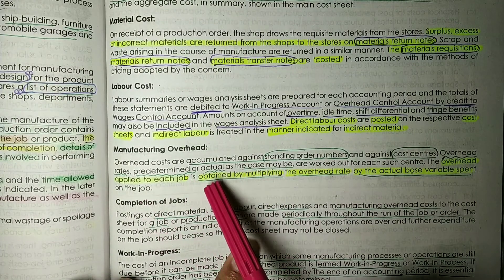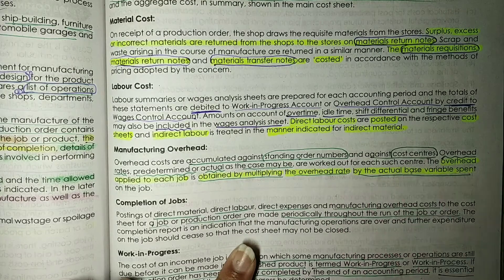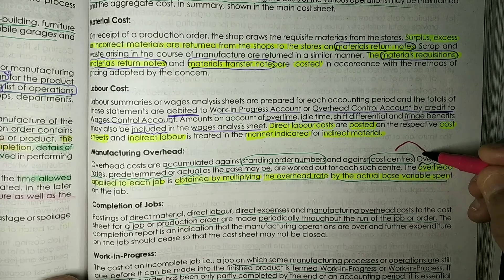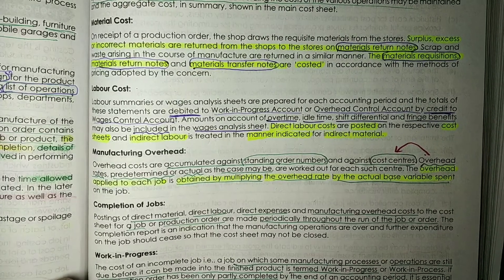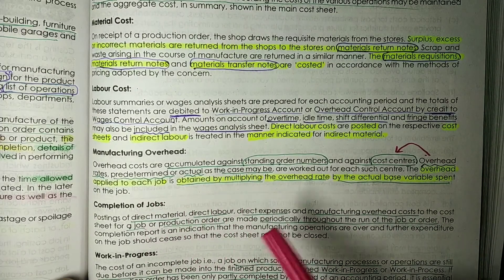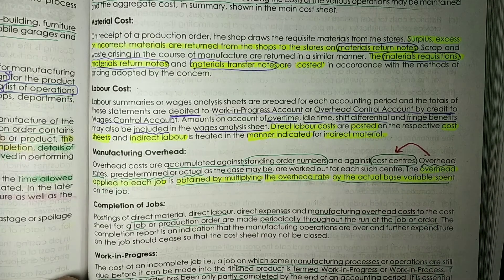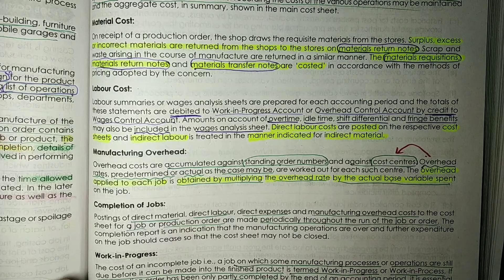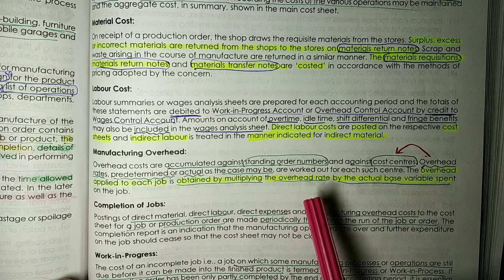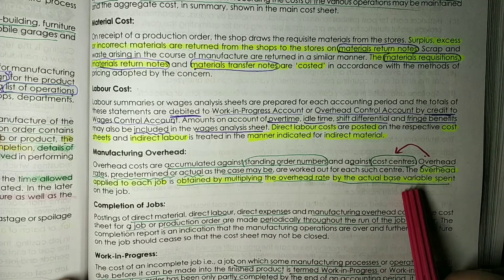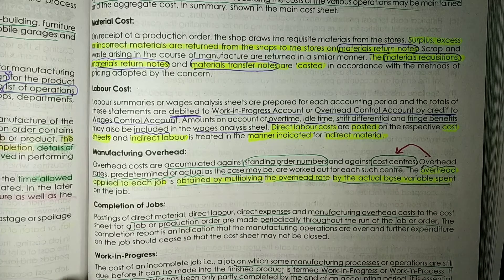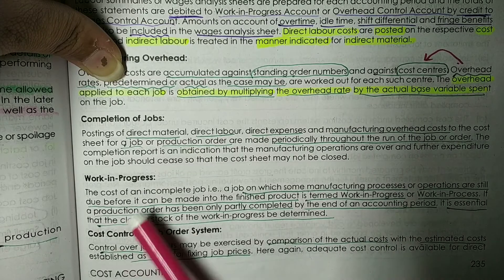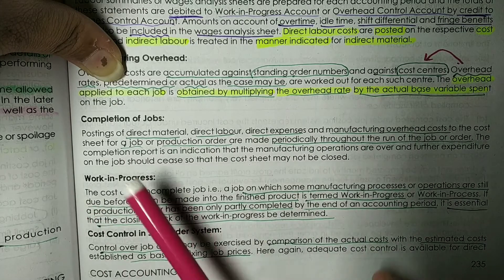Overhead rates — whether predetermined or actual as the case may be — are worked out for each cost center. The overhead applied to each job is obtained by multiplying the overhead rate by the actual base variable spent on the job. The cost of direct material, direct labor, direct expenses, and manufacturing overhead is then posted to the cost sheet for a job or production order.